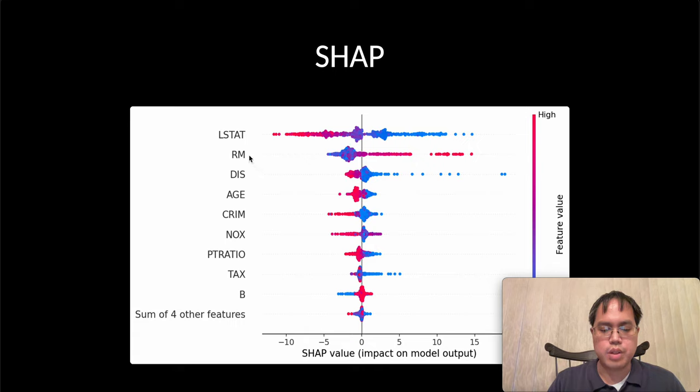This feature here could be exit velocity. Exit velocity is more important than batting average, according to this plot. And a higher SHAP value indicates more impact.